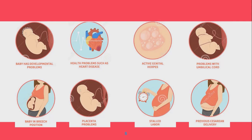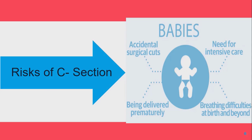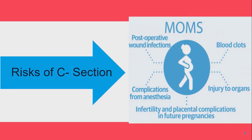C-section is life-saving, but there are some risk factors also associated with it. In babies, for example, there is a chance of accidental surgical cuts, and the need for intensive care arises. Certain respiratory problems also arise in the baby due to C-section. For the mother, risks include thromboembolism or blood clots, wound infections, complications of anesthesia, injury to organs, and complications in upcoming deliveries.